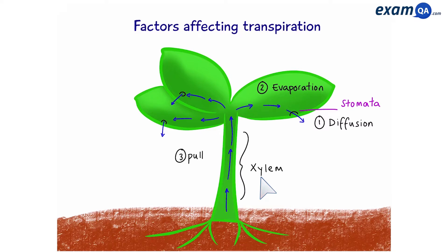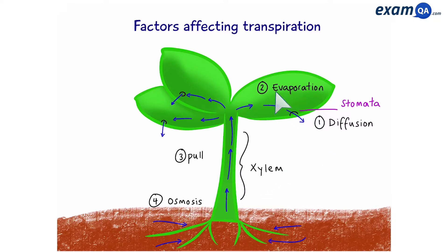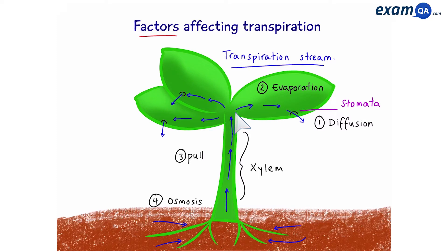Finally, water enters the roots by osmosis. So we have water diffusing out of the leaves, which causes more water to evaporate inside the leaves. This then causes water to be pulled up the plant inside the xylem, and then more water enters the roots via osmosis. The movement of water through a plant is called transpiration, and this is a transpiration stream.